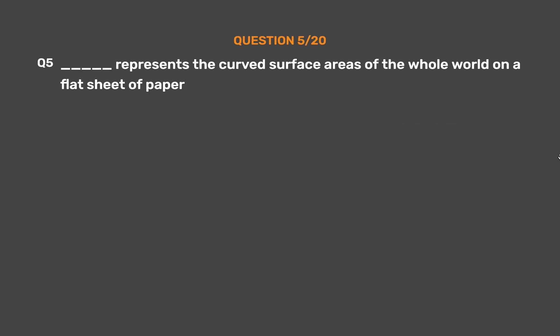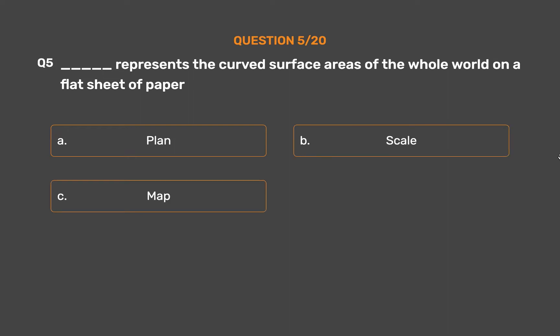Question number 5. __ represents the curved surface areas of the whole world on a flat sheet of paper. Option A: Plan. Option B: Scale. Option C: Map. Option D: Globe.